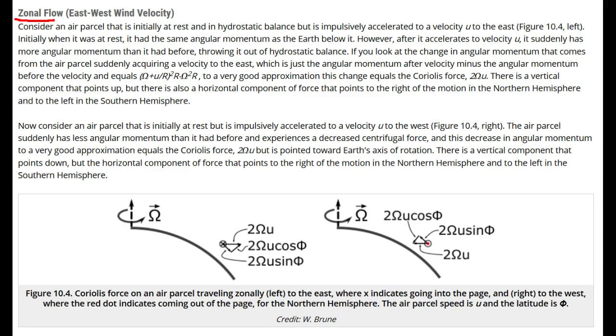For zonal flow, imagine an air parcel moving to the east with a velocity u. Angular acceleration is just the angular velocity squared times the radius of rotation. If the parcel is moving at a velocity of u relative to Earth's surface, then it has some extra angular momentum, which is u divided by r.